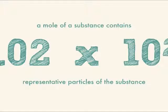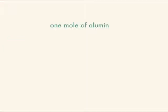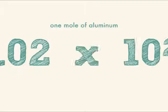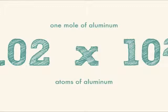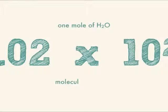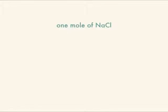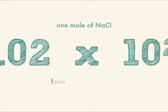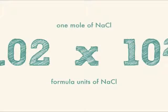Let's use an example. One mole of aluminum would be 6.02 times 10 to the 23rd atoms of aluminum. One mole of water is 6.02 times 10 to the 23rd molecules of water. And one mole of sodium chloride is 6.02 times 10 to the 23rd formula units of sodium chloride. And that's it.